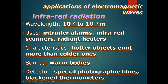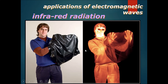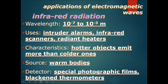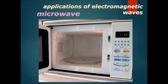The characteristics of infrared radiation is that hotter objects emit much more infrared radiation than colder objects. That's how you see the picture like this — this part over here is emitting more infrared radiation than these parts. The source would be warm bodies; detectors would be special photographic films or blackened thermometers.